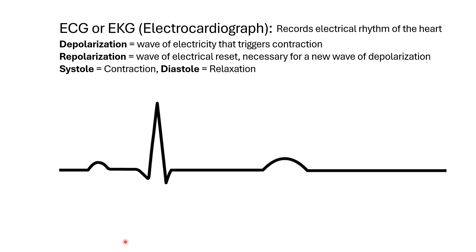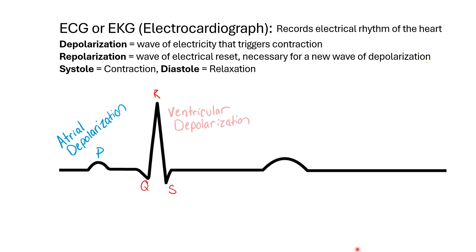When we're looking at the ECG, this first little wave we're seeing here is the P wave, and that is atrial depolarization — the wave of electricity that is going to make the atria contract. The next part is the QRS complex, and that is ventricular depolarization, which is going to make the ventricles contract.